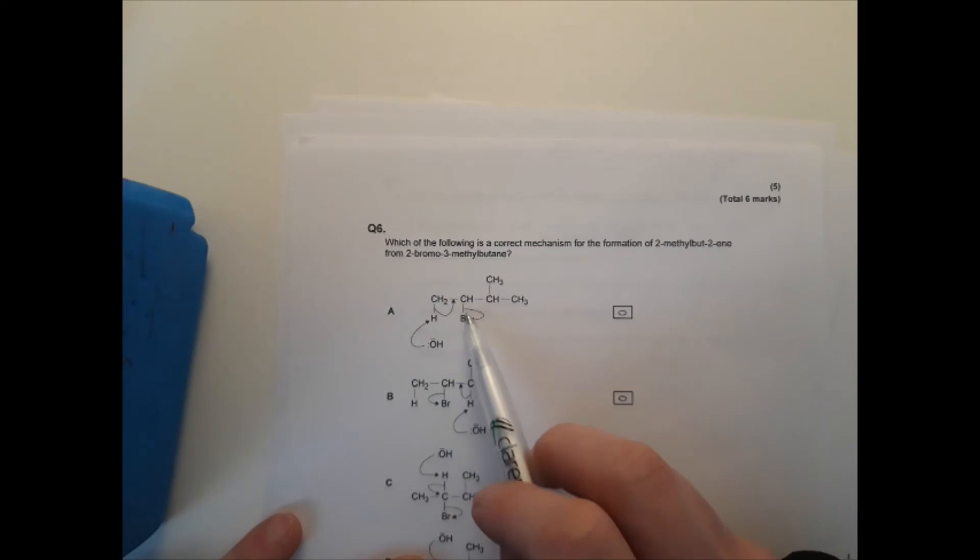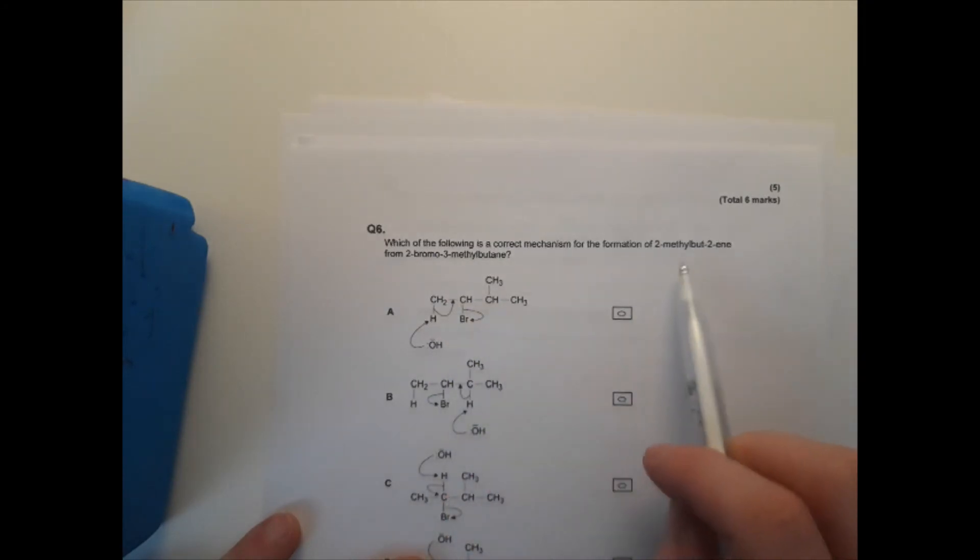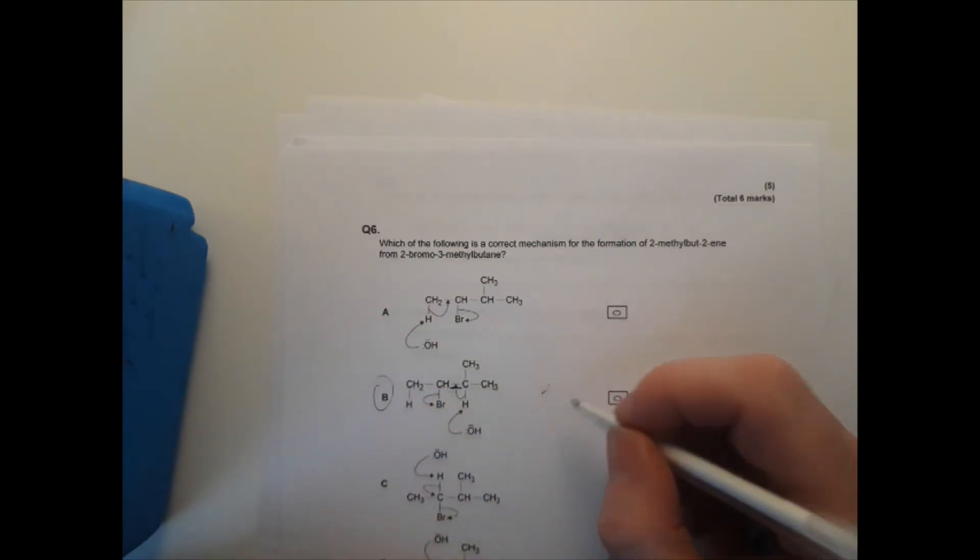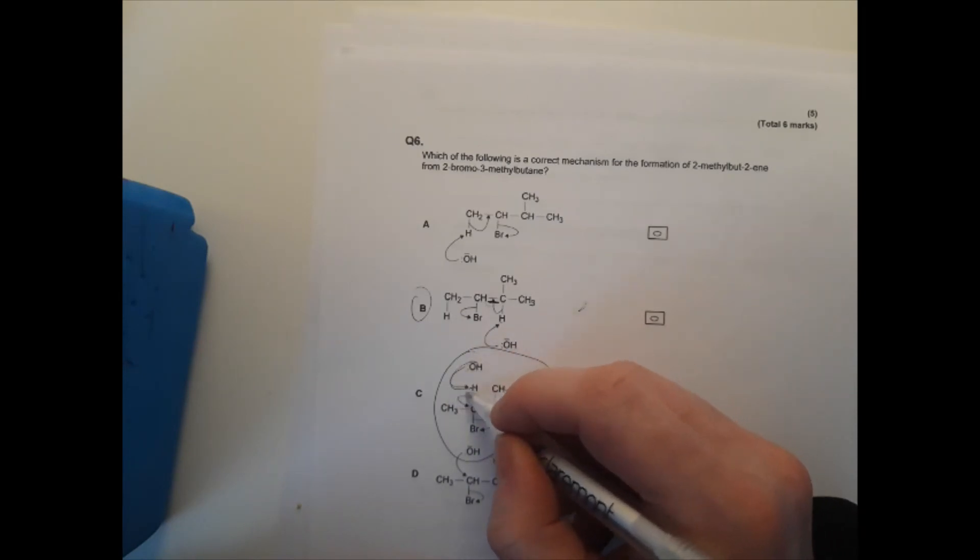Which of the following is the correct mechanism for the formation of 2-methylbut-2-ene? This mechanism looks good — nothing wrong with any of those arrows. However, I want but-2-ene, and that one gives but-1-ene: one, two, three, four — there's your but, and there's position two. This one looks very likely to me — that arrow's fine, that arrow's fine — you'll have a double bond here: 2-methylbut-2-ene. That one is wrong because you're attacking the wrong carbon.